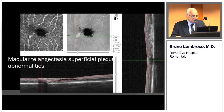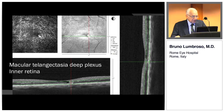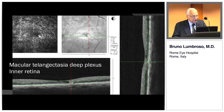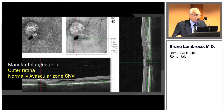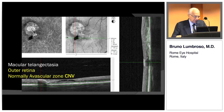Look at this image: this is macular telangiectasia in the superficial vascular network — you can see the abnormalities. Going down to the deep plexus, there are different kinds of abnormalities. Going deeper in this eye, we find a new vessel that was not seen on the fluorescent angiograph the patient brought with him. So we had to treat him.